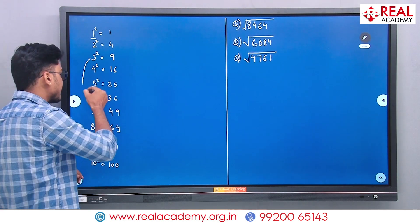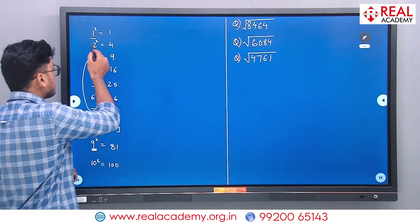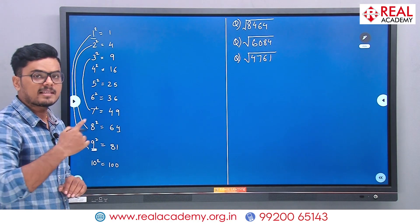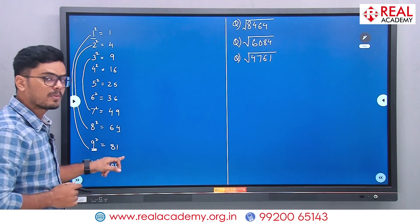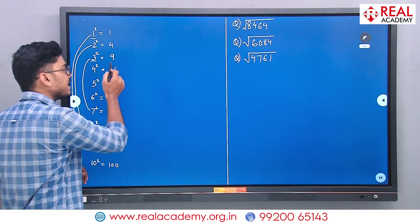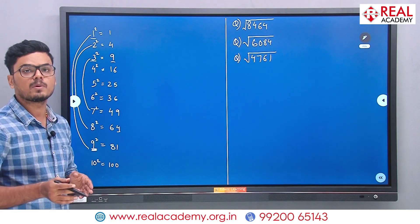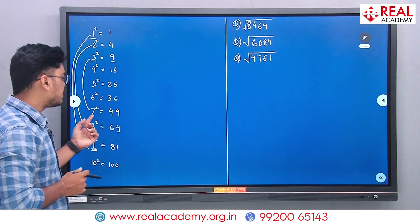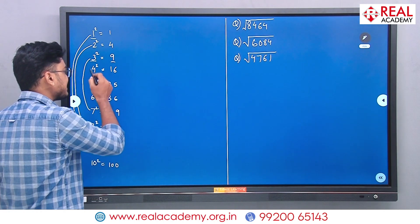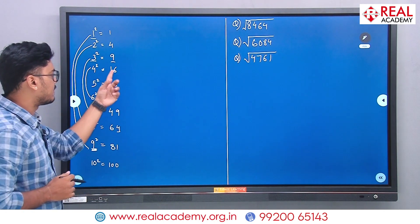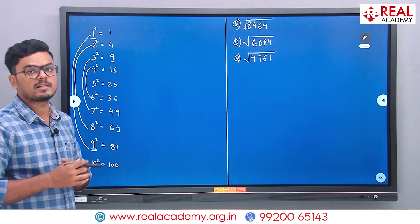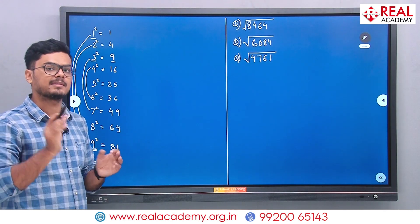The same is the case for 3 and 7. 3 squared gives 9 in units place, and 13 squared is 169 — always ending in 9. 17 squared is 289 — also ends in 9. So 3 and 7 in units place give 9. Same is the case with 4 and 6 — the units place is always 6. 4 squared is 16, 14 squared is 196, 16 squared is 256 — always ends in 6.